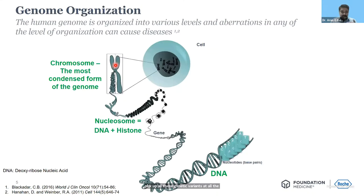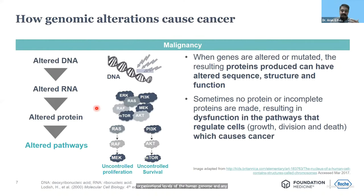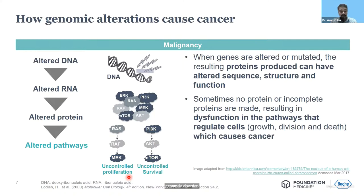Any change in the DNA is going to affect the structure of RNA, which affects the structure of protein. What that really translates in the cell is that it's going to affect cellular processes where you have different cell signaling pathways, which get tremendously altered. The point I would like to make here is that any malignancy is essentially a scar in the genome — it's a genomic disorder. Understanding the genetic basis of cancer is what comprehensive genomic profiling is all about, and that helps us understand tumor biology and designate specific clinical management strategies.